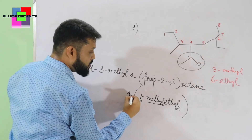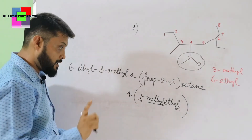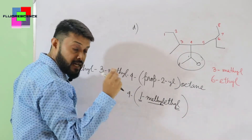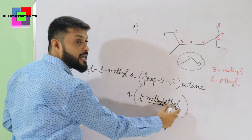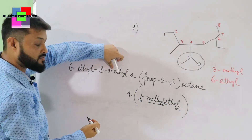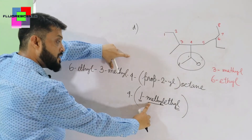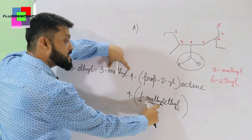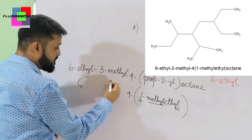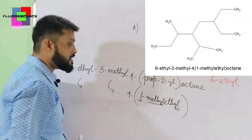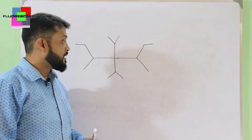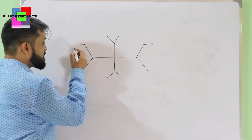This entire species is coming out from position four. We treat this entire portion as a single species and write it continuously: '1-methylethyl'. Note that methyl starts with M and 1-methylethyl also starts with M, but since it is 'methyl' followed by 'ethyl', the alphabetical ordering applies. So instead of prop-2-yl, we write '4-(1-methylethyl)octane'.